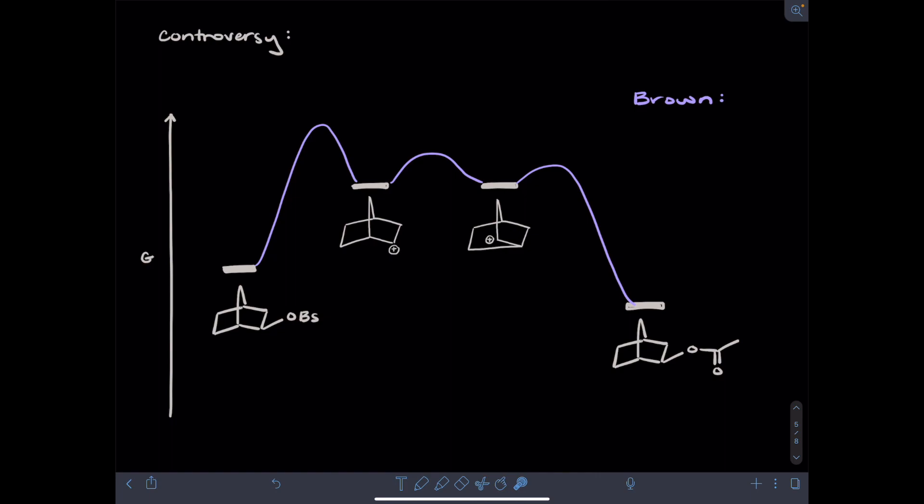So once the carbocation has been generated, there are two forms of it that differ by a rearrangement reaction. And at the transition state for this rearrangement, where I'm taking the electrons from this carbon-carbon bond and bringing them to the carbocation, you would have partial bonds between this front-left carbon and the central carbon, and between the same carbon and the right carbon.